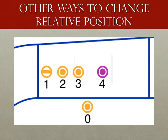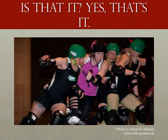There are a few other ways to change relative position as well. One is by knocking the opponent down, and the other is by knocking the opponent out of bounds. In each of these two cases, the position of that opponent has changed to 0, as being down or out of play has no position. This is also why destroying the pack is a penalty — it causes all blockers to have no position. You can also gain position if a player falls or exits the track of her own volition, or if a skater is called on a penalty. So when reading the rules and Casebook, when a section says a skater gained or lost position, this is what they're referring to.